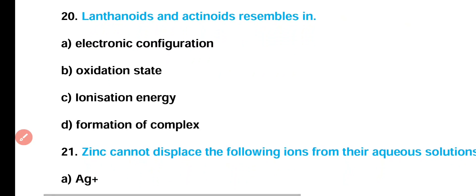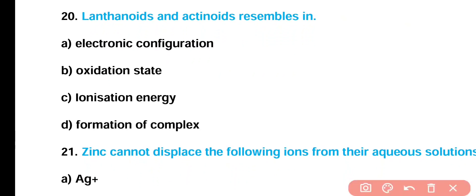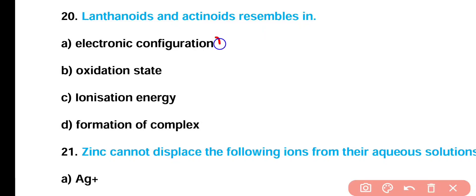Question number 20: Lanthanides and actinides resemble each other in — electronic configuration, oxidation state, ionization energy, or formation of complexes? Correct answer is option A. Lanthanides and actinides resemble each other in respect of electronic configuration.